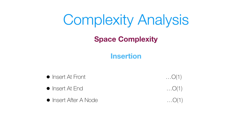For the space complexity of insertion: inserting at the front uses a constant amount of space — O(1). Similarly, inserting at the end is also O(1) constant space. And inserting after a given node also uses only a constant amount of space, so it's O(1) as well.